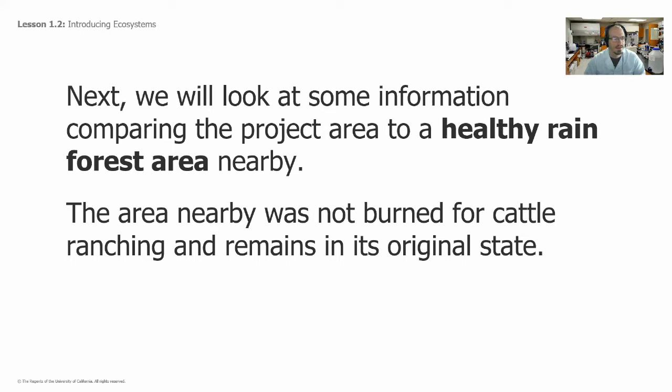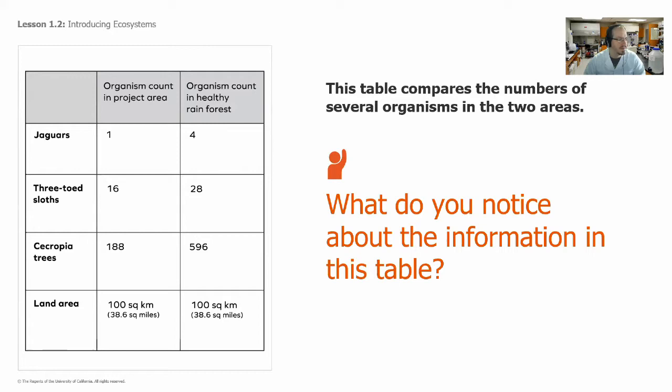Next we're going to look at some information comparing the project area to a healthy rainforest area nearby. The nearby area was not burned for cattle ranching and remains basically in its original state. This table compares the numbers of several organisms in the two areas: jaguars, three-toed sloths, cecropia trees, and the land area size. What do you notice about the information in the table?